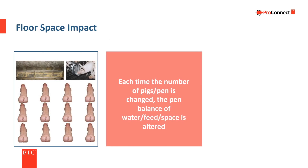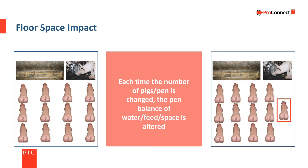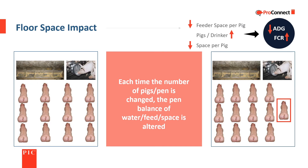The barn design establishes the target number of pigs per pen based on the floor space per pig, the size of the feeder, and the number of water sources. Adding more pigs per pen impacts the amount of space per pig as well as the access to feed and water. By increasing the stocking density — more pigs in the same space — the feeder space per pig is reduced, the number of pigs per drinker is increased, and the space per pig is decreased, which can lead to lower average daily gain and higher feed conversion.